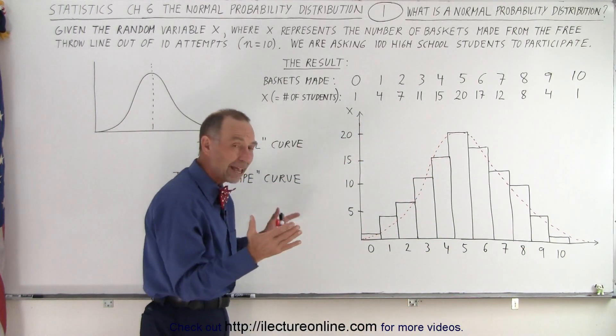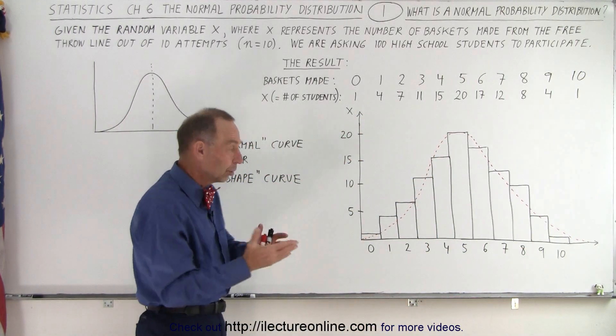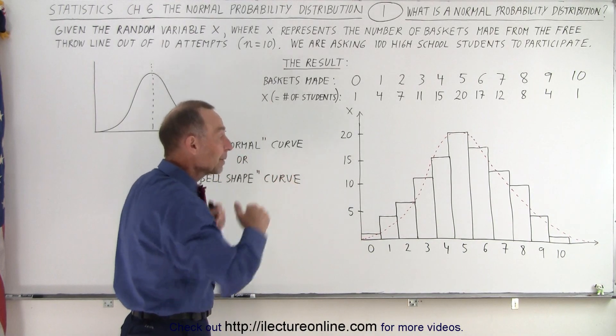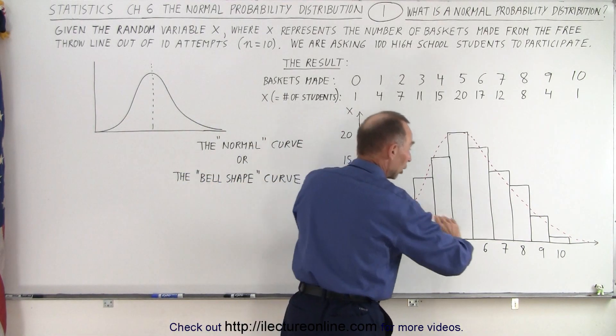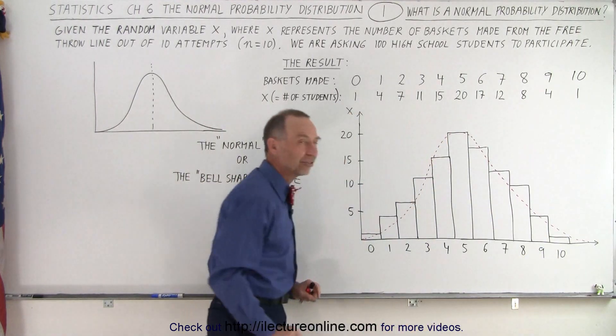And since both sides of the curve look the same, it's a Normal Distribution of Probabilities. The highest probability in the middle, the lowest probability off on the sides.